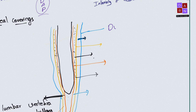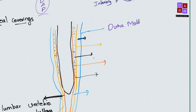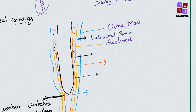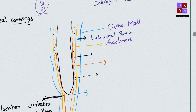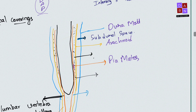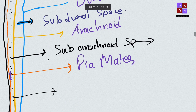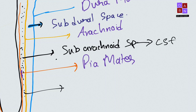The outer coverings are dura mater, arachnoid mater, and pia mater. The outer covering is dura mater, next is arachnoid mater — in between dura and arachnoid we have the subdural space. After that comes pia mater. In between the arachnoid and pia mater we have the subarachnoid space, through which CSF flows.